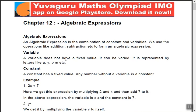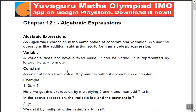A variable does not have a fixed value. For example, x can change. If x is 1, the value of 2x plus 7 is 2 into 1 plus 7; if x is 2, it's 2 into 2 plus 7; if x is 3, it's 2 into 3 plus 7. It changes as the variable changes. Variables are generally represented by x, y, z, etc.